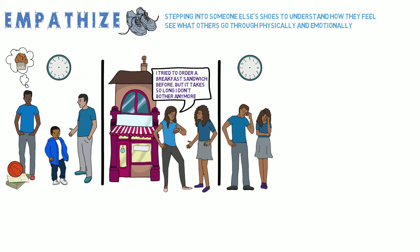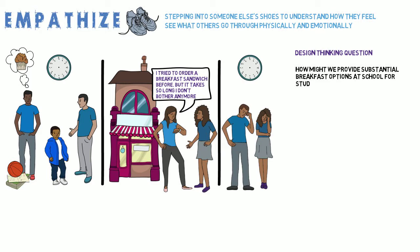Now that the team understands what the students who experienced this problem feel, they created a design problem statement to guide their design work. They asked: how might we provide substantial breakfast options at school for students so they can have energy to go about their day?